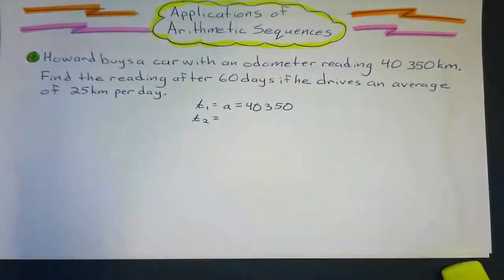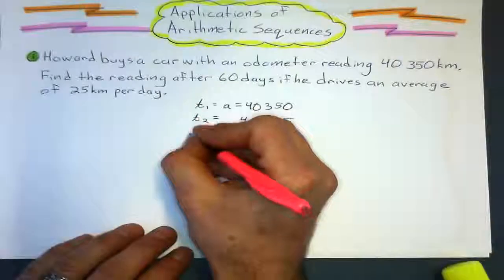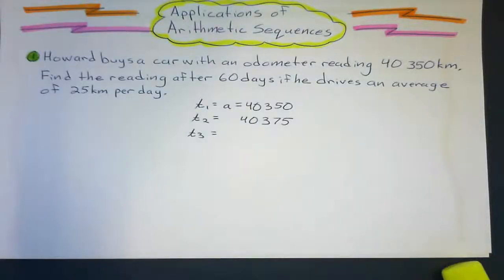So the second term of that sequence would be, second day would be 40,375. Third term, the third day, 25 more.